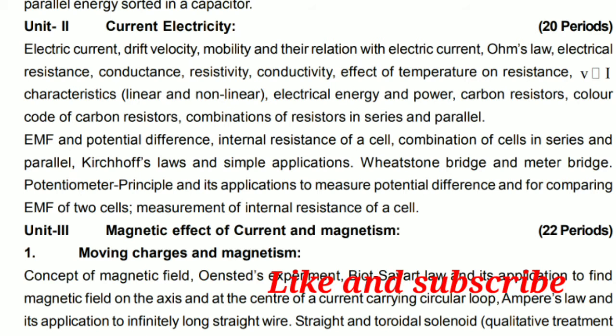We also measure the internal resistance of a cell using the potentiometer. Units 1 and 2 together carry a total of 15 marks in the final examination.